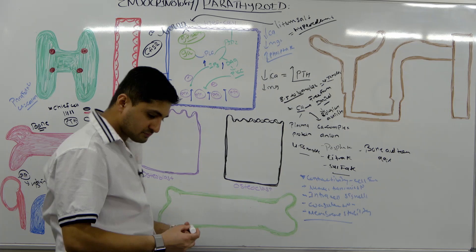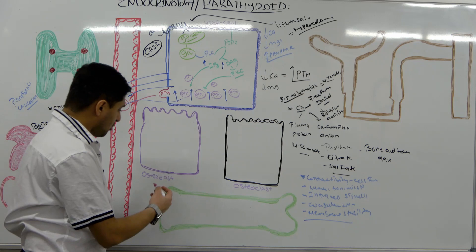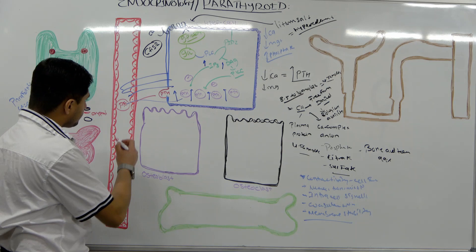Now, this parathyroid hormone (PTH) is in your circulation — what is going to happen? The PTH will go to various places. One thing it can go to is the bones. Inside bones, there are different types of cells: osteoblasts and osteoclasts are the main types of cells.